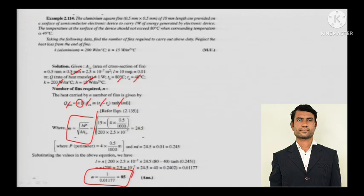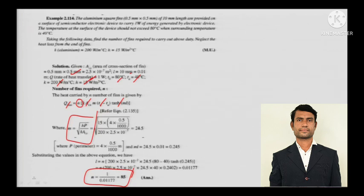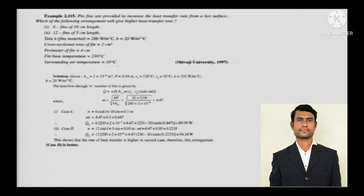You need to analyze the numerical the way the question setter wants. It doesn't mean you always find M first and then Q. You need to check every line carefully. Here Q was given, and if you don't notice that, you would be in trouble. It's a good numerical because it asks for something less routine.